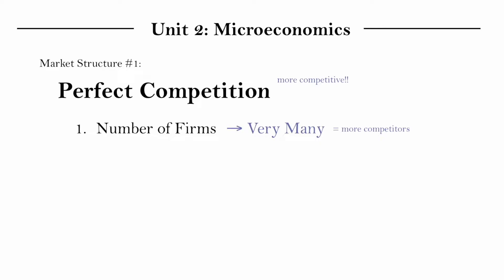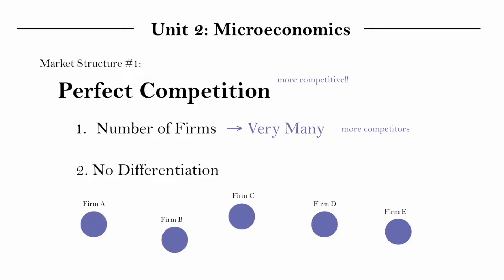The second condition is no differentiation — no differentiation in the goods that these very many firms produce. Every firm in a perfectly competitive market produces identical goods. Because if firm D suddenly had differentiated polka dot goods, people would have a reason to prefer firm D's goods over everyone else's, meaning less competition for firm D. We want all firms competing with the same good for maximum competition.